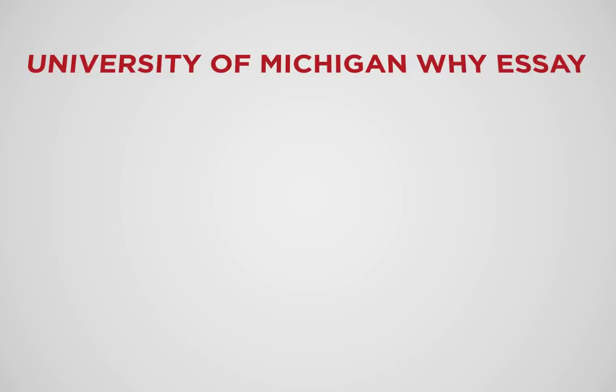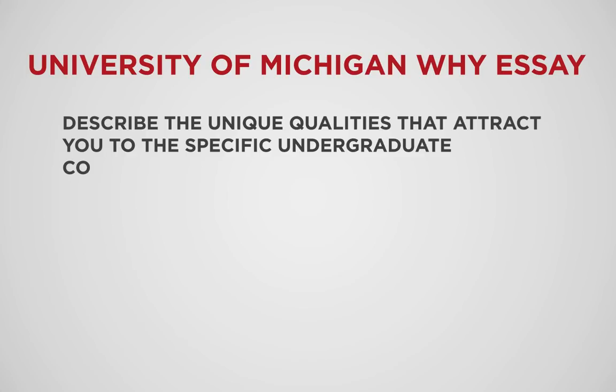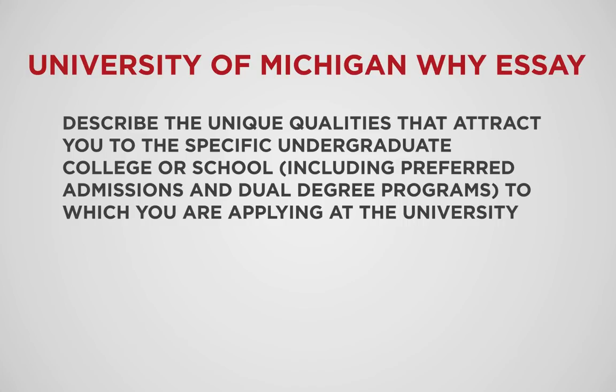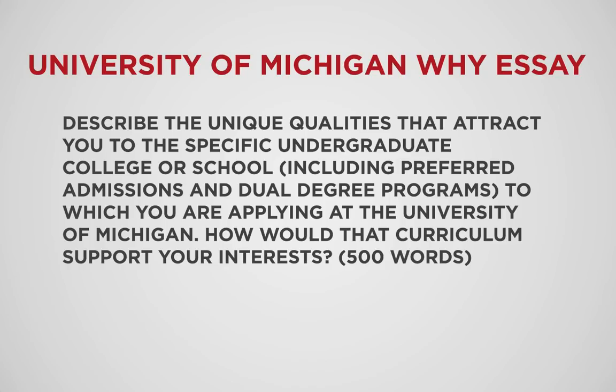Let's start with the Michigan essay: 'Describe the unique qualities that attract you to the specific undergraduate college or school, including preferred admissions and dual degree programs to which you're applying at the University of Michigan. How would that curriculum support your interest?' In 500 words. This is a rather lengthy Why Essay as compared to most — 500 to 650 words is usually the top limit for most schools.